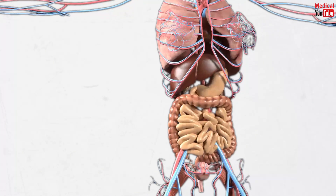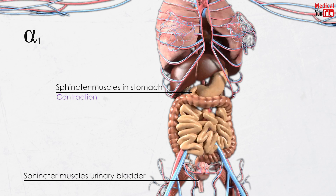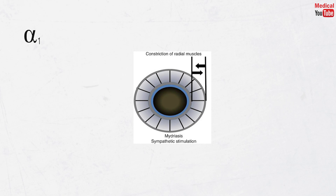Alpha-1 is located in the sphincter muscles of the stomach causing contraction, in the sphincter muscles of the urinary bladder causing contraction and urine retention, and in blood vessels causing contraction and increasing blood pressure. Alpha-1 is also located in the radial muscles of the eye, responsible for contraction causing mydriasis.